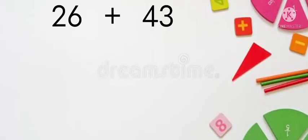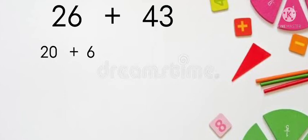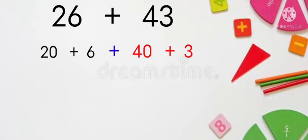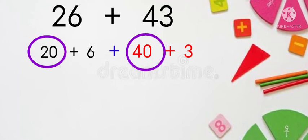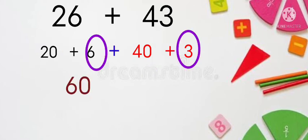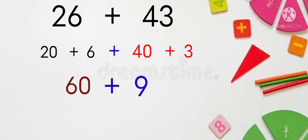In this way, let's do 26 plus 43. First you have to split 26, that is 20 plus 6, then you have to split 43, that is 40 plus 3. Now you have to add 20 plus 40 will give you 60, then you have to add 6 plus 3, that will give you 9. 60 plus 9 is equal to 69.